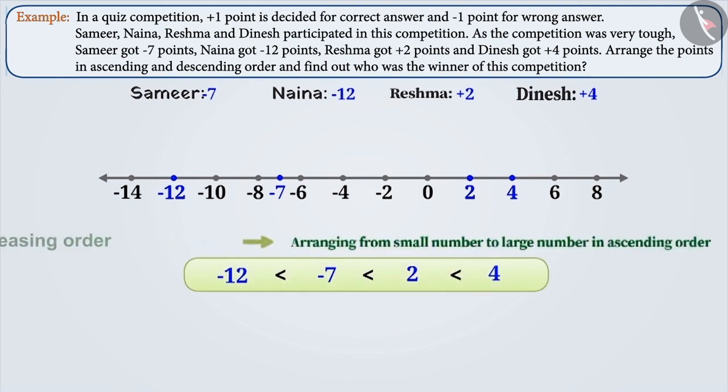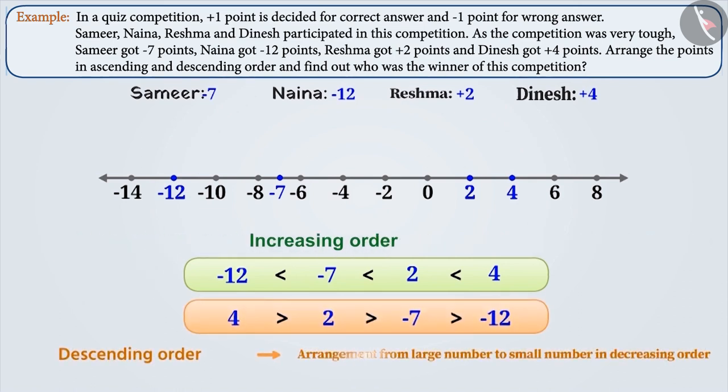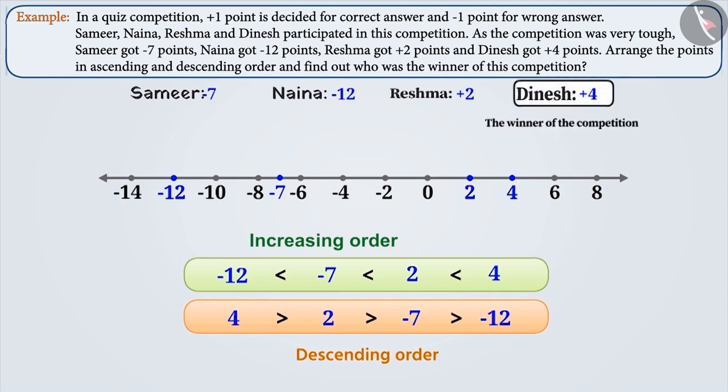Arranging the numbers from small numbers to large numbers, we get an order. The order obtained when the numbers are arranged in increasing order from small to large is called ascending order. If we reverse it, it will be called descending order. As you can see, plus 4 is the largest, so Dinesh is the winner of the competition.